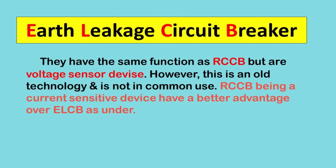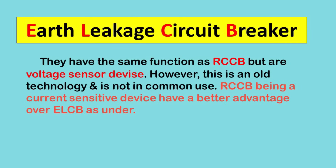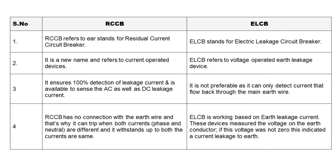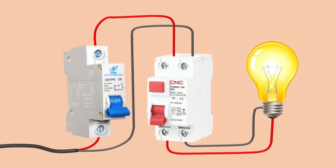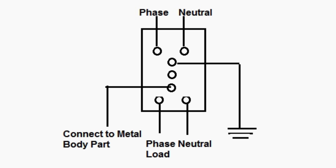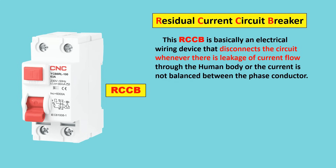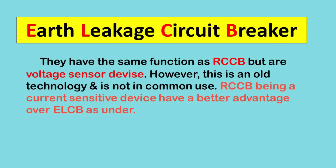Next device is ELCB. Full form of ELCB is Earth Leakage Circuit Breaker. Its working is the same as RCCB — to protect you from electrical shocks. The difference is: RCCB operates on current and requires only phase and neutral supply for connection, while ELCB operates on voltage and requires phase supply, neutral supply, and an earthing wire. Both RCCB and ELCB provide protection from electric shocks and earth fault.